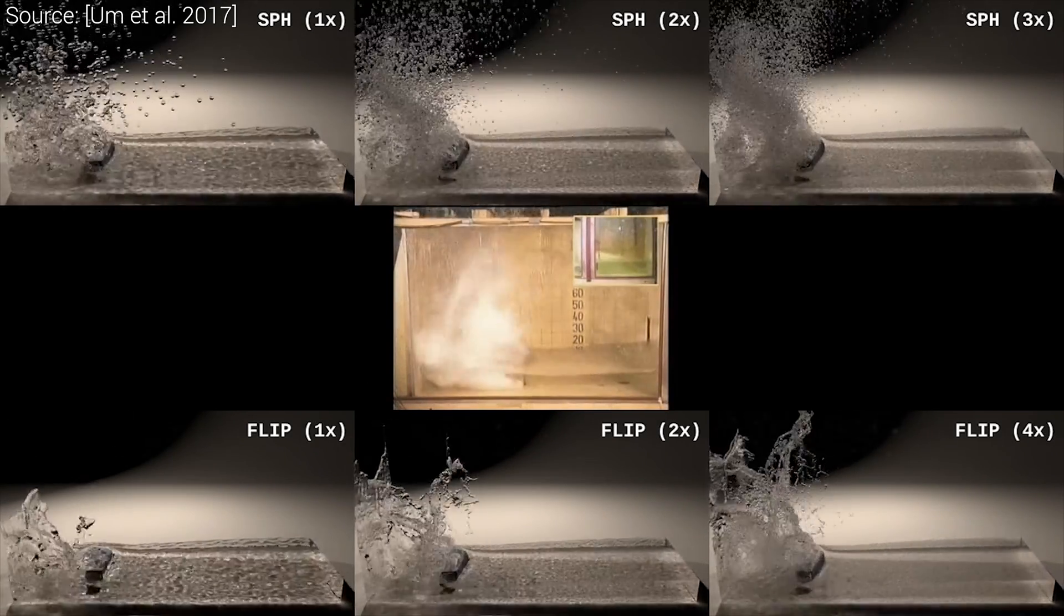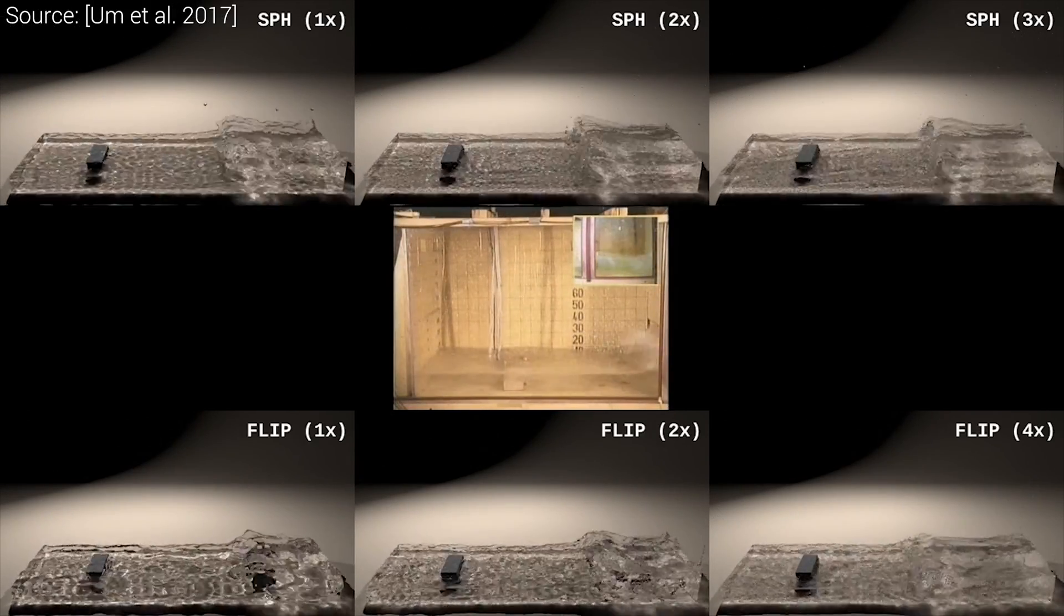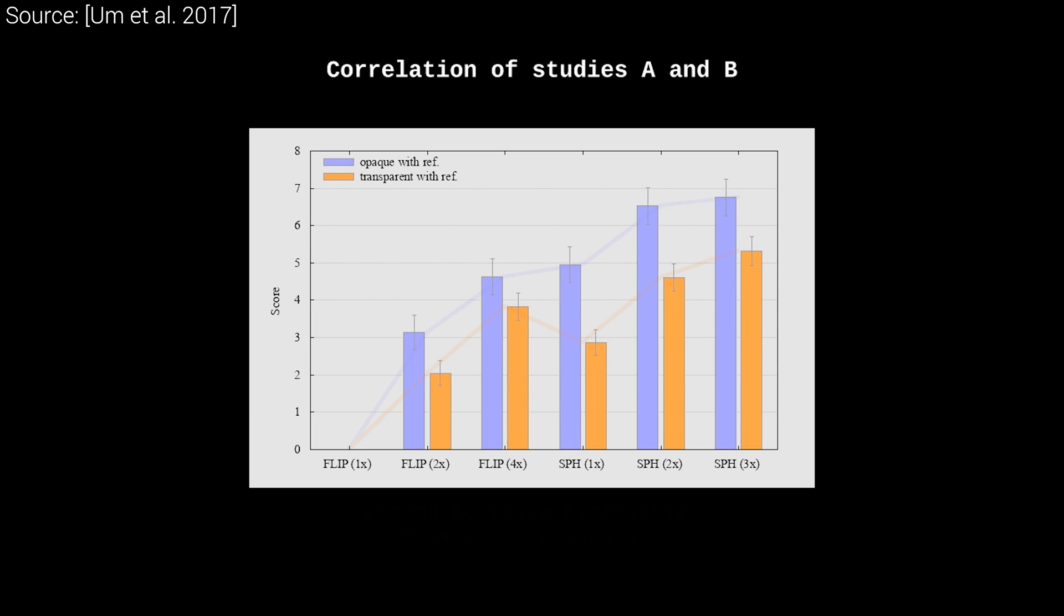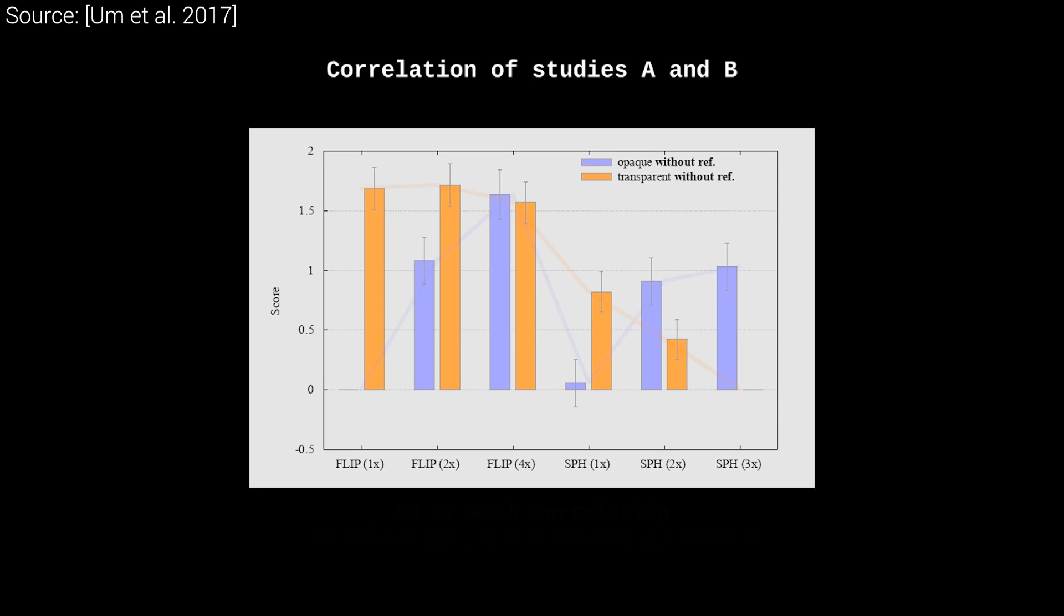Another curious finding is that if we deny access to the reference footage, we see a large change in different responses, and a similar jump in ambiguity. This means that we are reasonably bad at predicting the fine details, therefore, if the simulation pushes the right buttons, the users will easily believe it to be correct, even if it is far away from the ground truth solution.